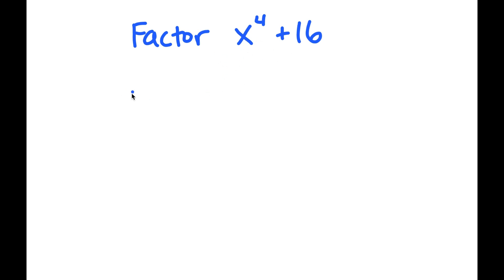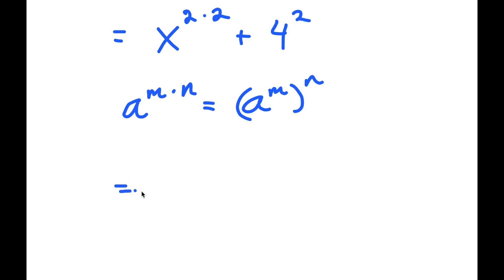What I'm going to first do is rewrite this as x to the power of 2 times 2, plus 4 squared. Now, a to the power of m times n equals a to the power of m to the power of n. So x to the power of 2 times 2 turns into x to the power of 2 to the power of 2.